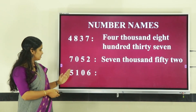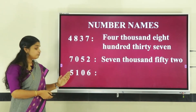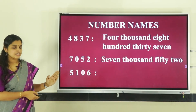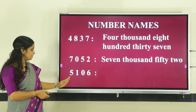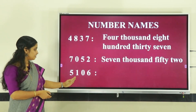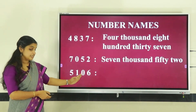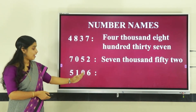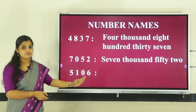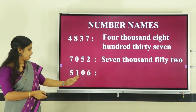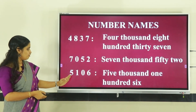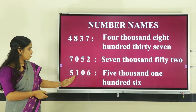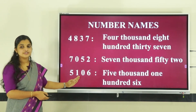The last number is 5, 1, 0, 6. Five is in the thousands place, one is in the hundreds place, zero is in the tens place, and six is in the ones place. So this number is read as five thousand one hundred and six.